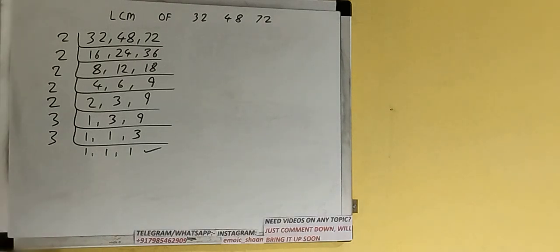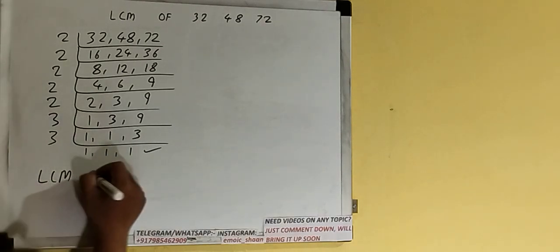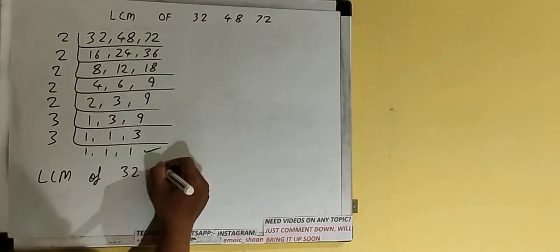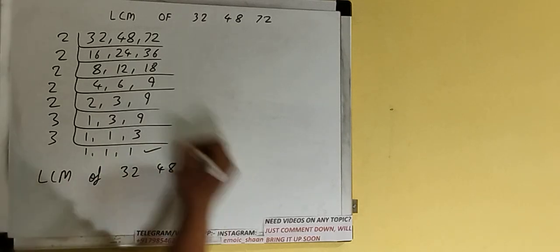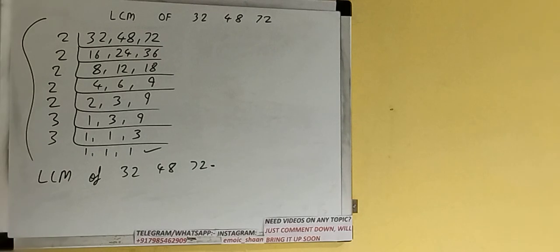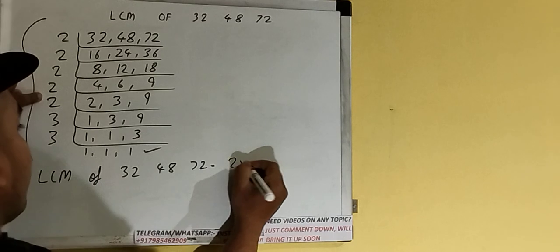And do one last thing: the LCM of 32, 48, 72 would be multiplying whatever we have on the left-hand side. That is 5 times 2, 5 times 2, then 2 times 3.